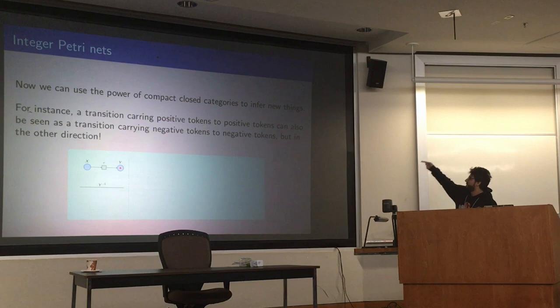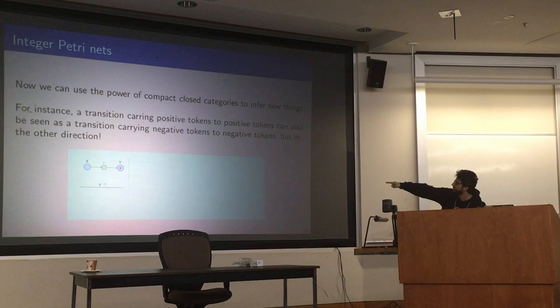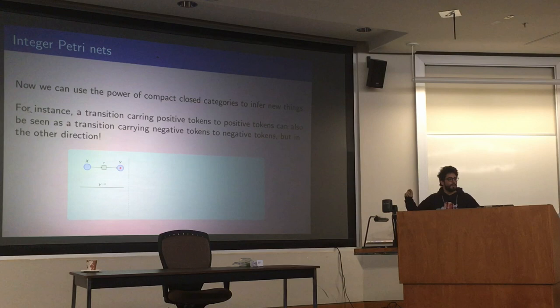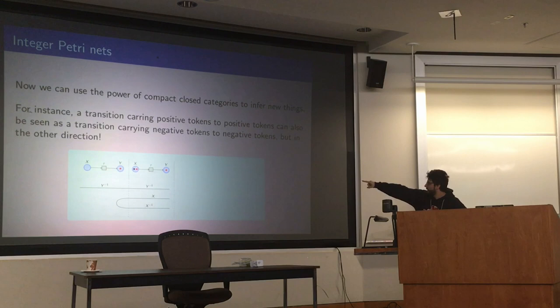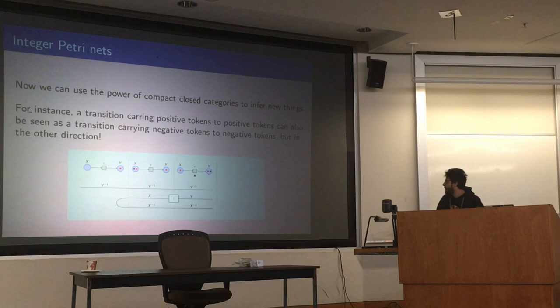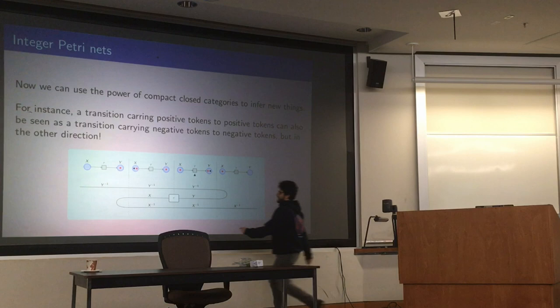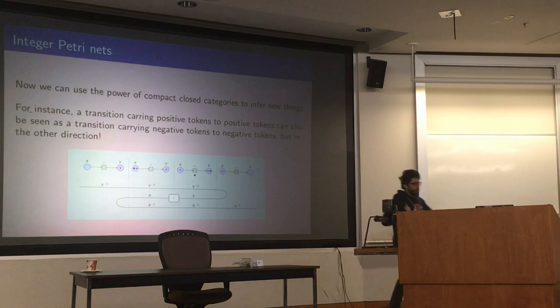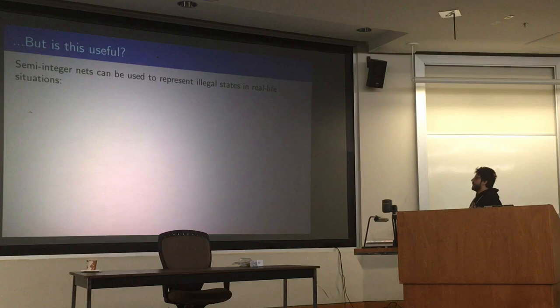So now we can use this stuff to do something interesting. So the first thing that we note is that if we have a standard transition, like that one, Tau carries tokens from X to Y, but it can go backwards with negative tokens. So the idea is that I start in Y, I produce a couple of token-antitoken, I apply Tau to X, and then I annihilate these things. And what I'm really doing is I'm moving this from here. So the idea is that negative tokens flow backwards, basically.